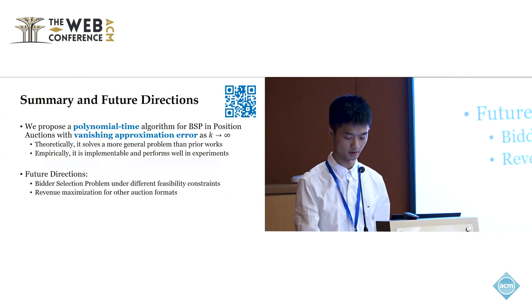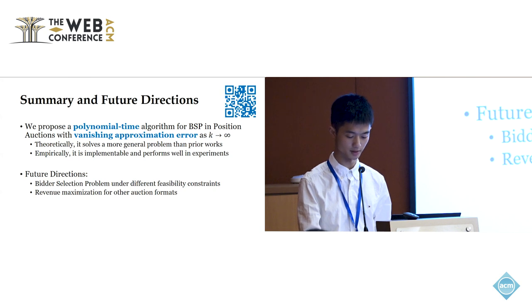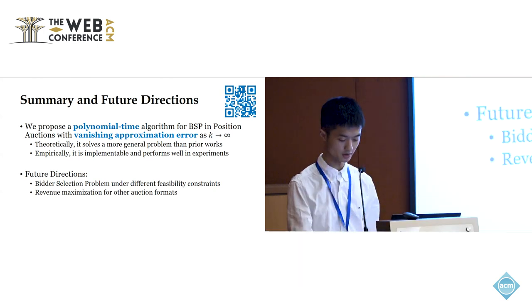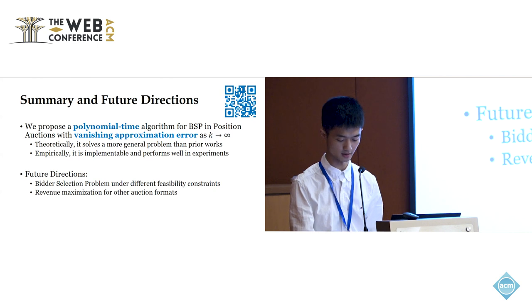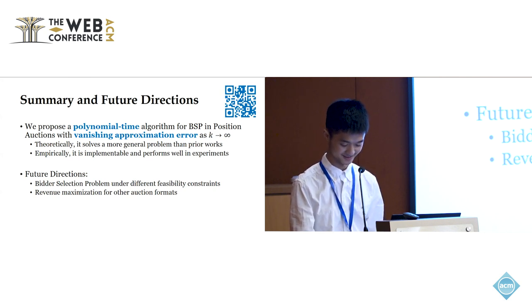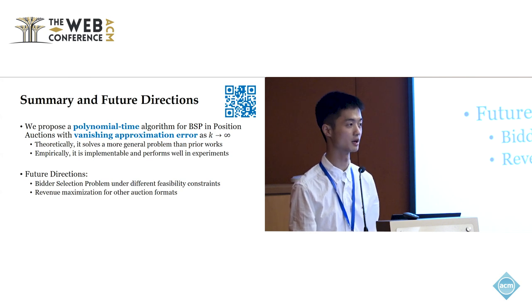To summarize, we propose a polynomial time algorithm for the bidder selection problem in position auctions with vanishing approximation error as parameter k grows. Theoretically, the algorithm solves a more general problem than prior works about bidder selection problem. And empirically, the algorithm is implementable and performs well in experiments. For future directions, it will be interesting to consider the bidder selection problem under different feasibility constraints or to consider the revenue maximization problem under other auction formats like VCG auctions. If you are interested in our work, please scan the QR code here to access the paper. Thanks for listening, and I welcome any questions.